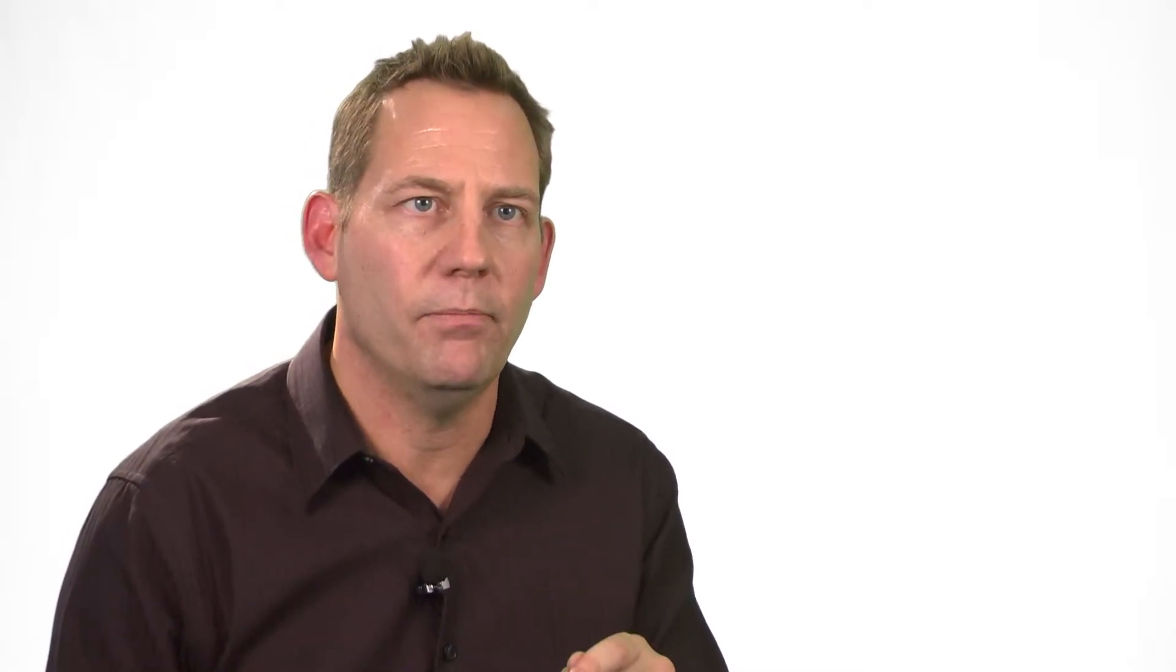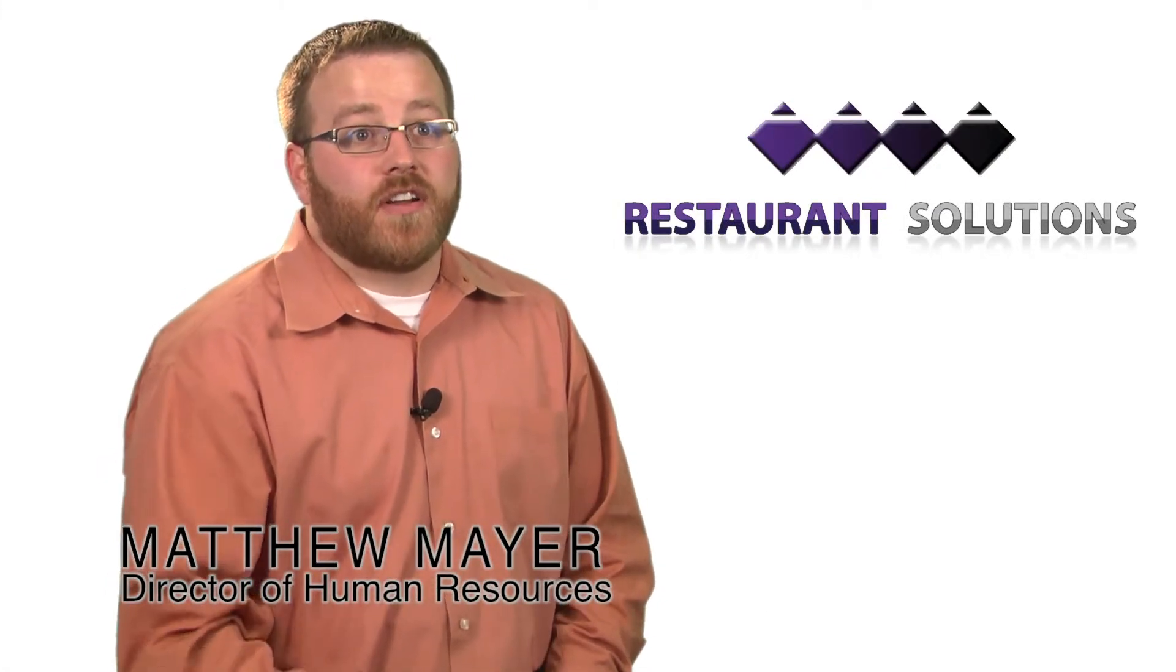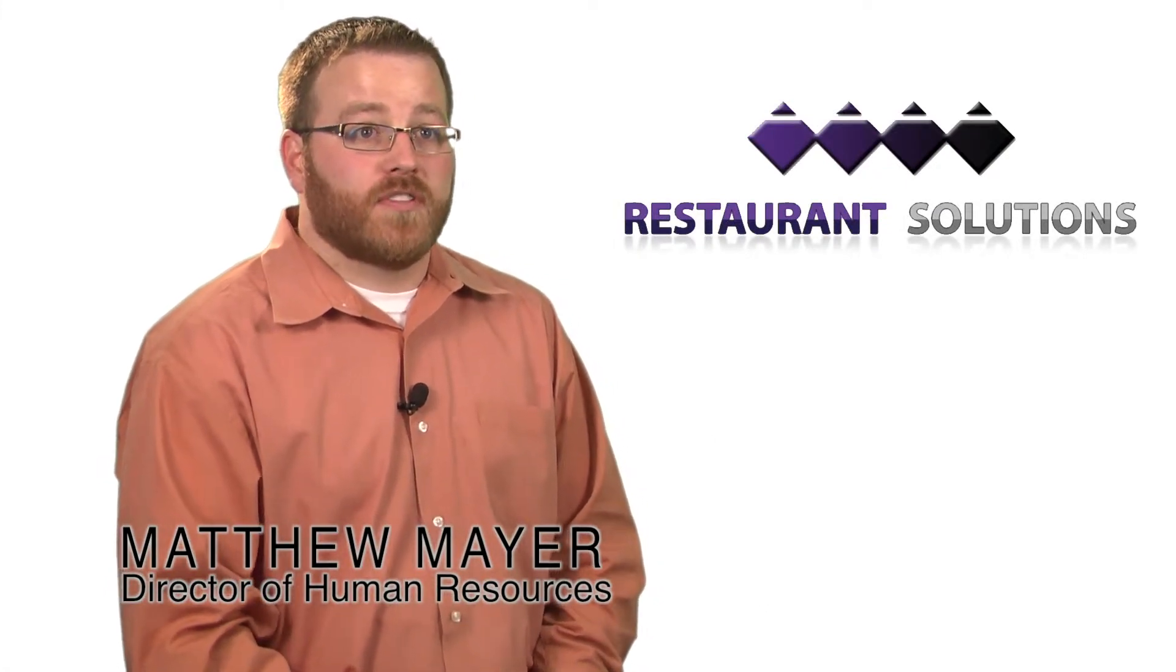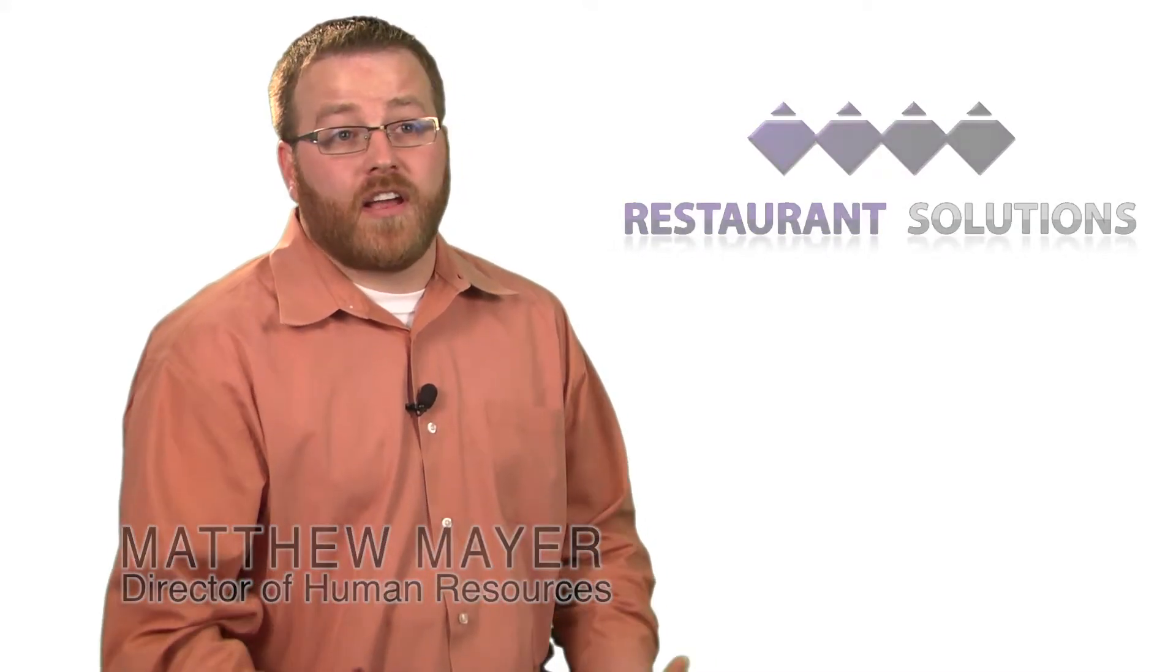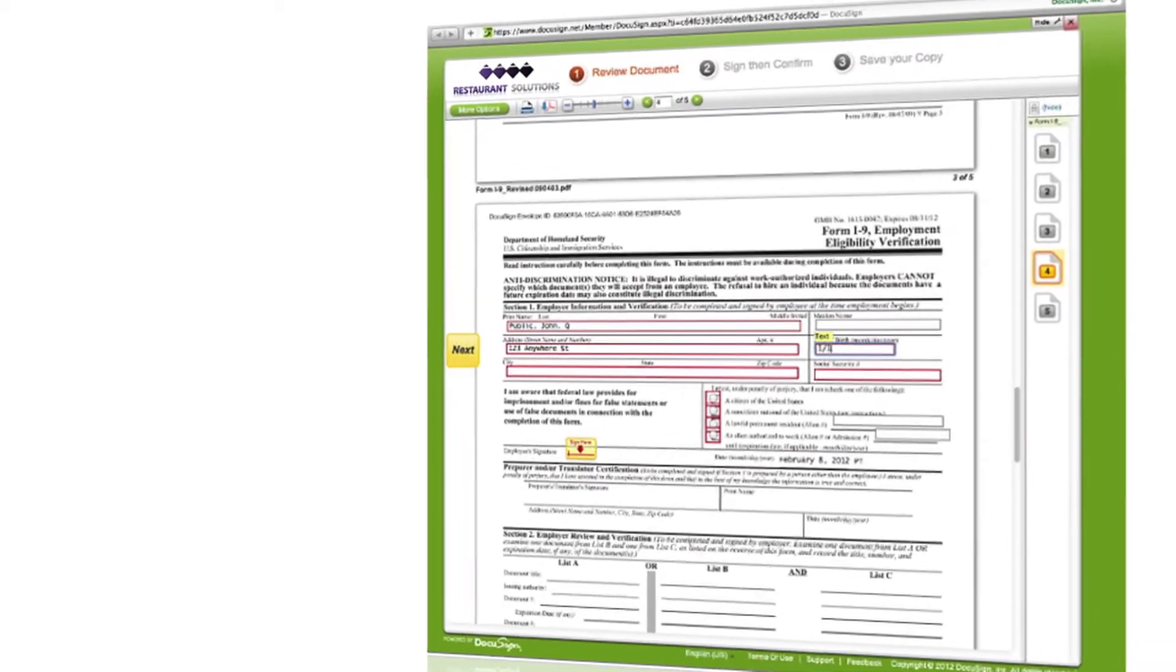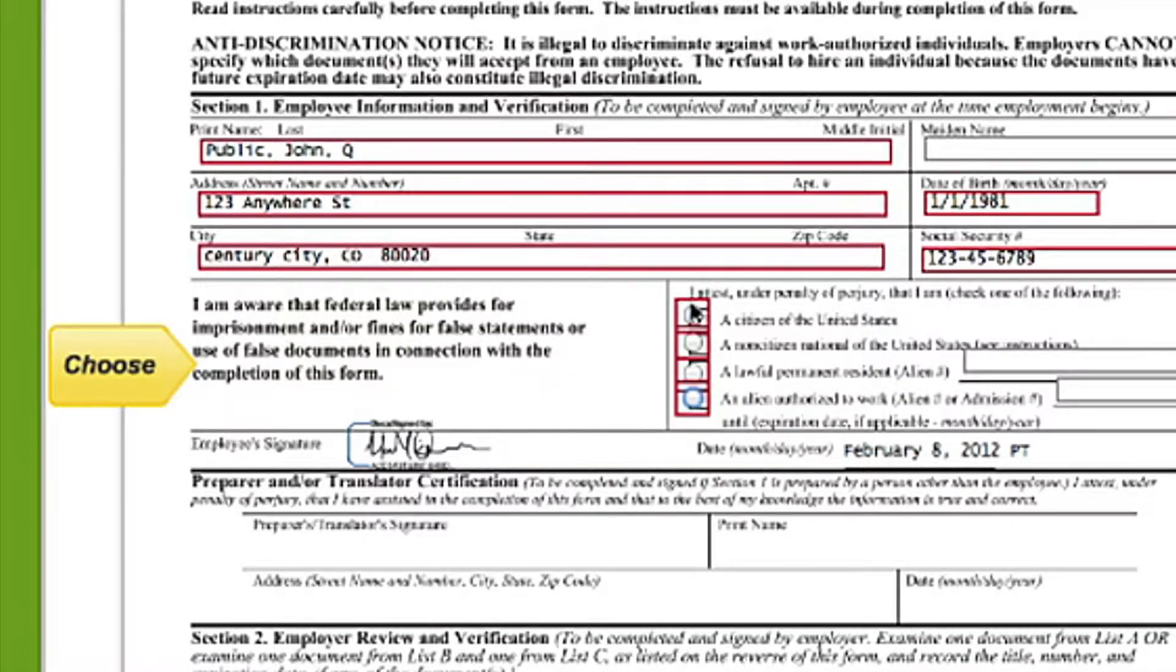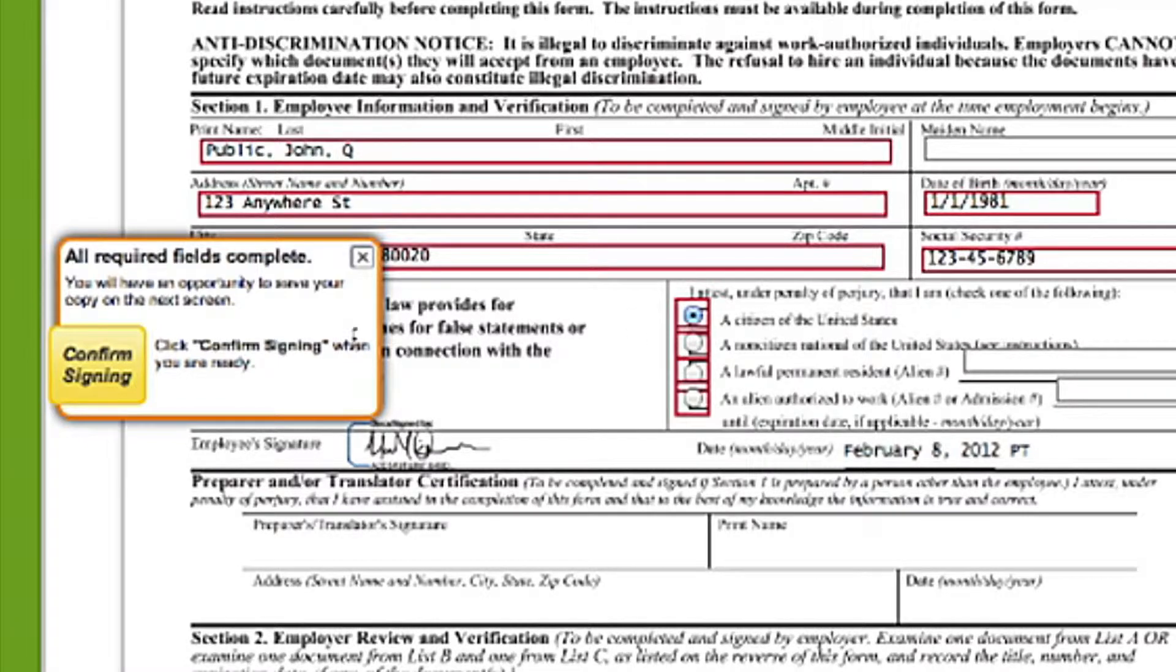And most importantly, it's so easy to set up. With the development of RSI's electronic signature and document storage system, managers now can concentrate on hiring the right person and not have to worry about managing the paperwork. I-9s, W-4s, new member applications, and employee handbooks are all signed and managed electronically. Now that's pretty groundbreaking.